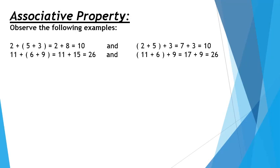But in the other calculation, with the same numbers, the group is different. I have changed the group. Here I have made a group of 2 and 5, and the sum of 2 and 5 I am adding to 3. So here also the answer is 10.